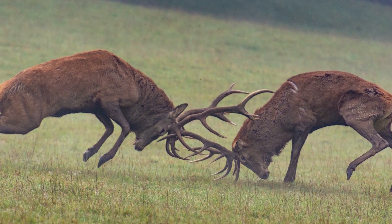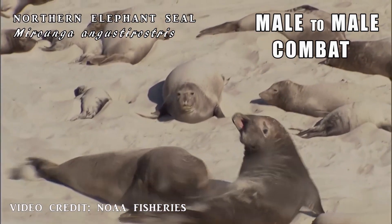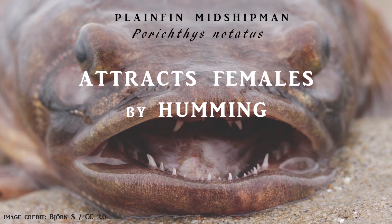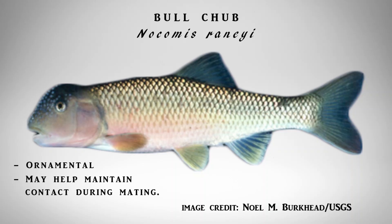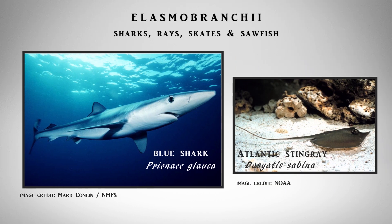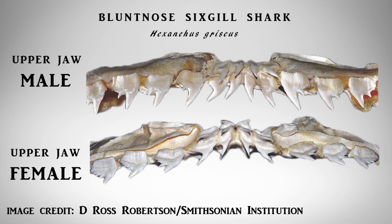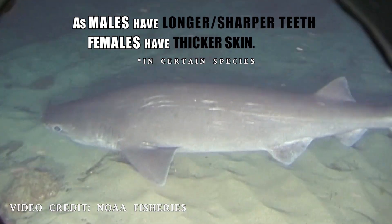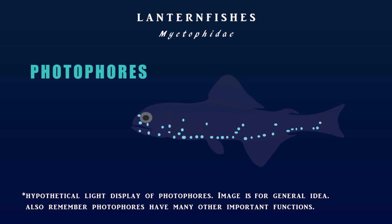Intrasexual selection is the effects of competition within a sex to obtain mates, like male-to-male combat or resource defense. Many different forms of sexually selected traits can play a role in attracting the other sex, or helping to intimidate or even battle the same sex, or enable other means to achieve reproductive success. This fish, the plain fin midshipman, woos females by humming as they contract muscles around the gas bladder. This bull chub has keratinized bumps on its swollen head that aids in reproductive success. In many elasmobranchs, or sharks, the males have teeth that are longer and sharper, which are used to grab females during mating — or, as theorized in the sixgill shark, to nip at the female's gill slits. In evolutionary response, females have thicker skin to protect against the rough mating rituals. Photophore arrangements, or light-producing organs, on lanternfishes attract mates in the dark depths.